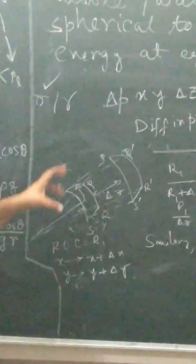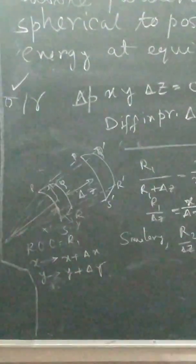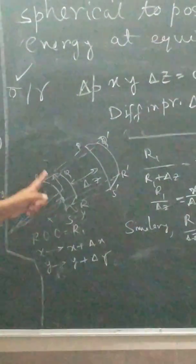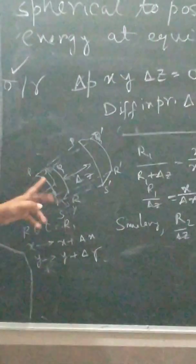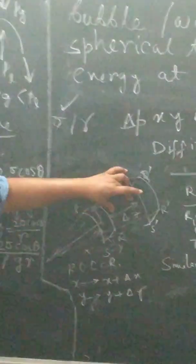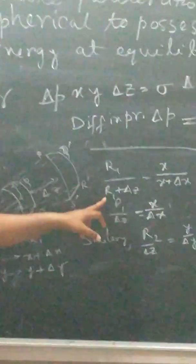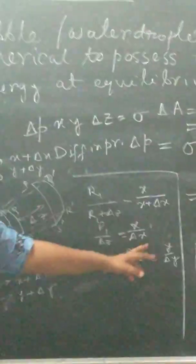Suppose you have the surface of a bubble. You take one part of its surface and it gets stretched by an amount delta z. The radius of curvature along the x-direction is r1 and along the y-direction is r2, since the bubble may not be perfectly spherical. The extension amount is delta z. From the geometry, r1 divided by (r1 + delta z) equals x divided by (x + delta x), where x has become x + delta x after stretching, and y has become y + delta y. So r1/delta z equals x/delta x, and similarly r2/delta z equals y/delta y.